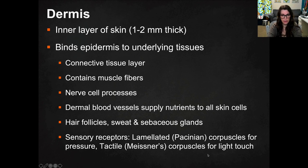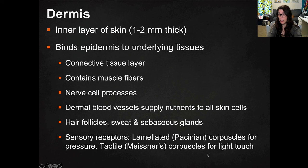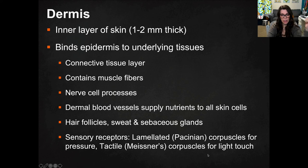The dermis is associated with a connective tissue layer — the adipose and areolar connective tissue that we talked about. It contains some muscle fibers, which we'll talk about in the accessory structures. There are nerve cell processes that function as receptors, blood vessels that supply nutrients to all of the skin cells, and hair follicles, sweat glands, and sebaceous glands are located here, along with all of those sensory receptors.